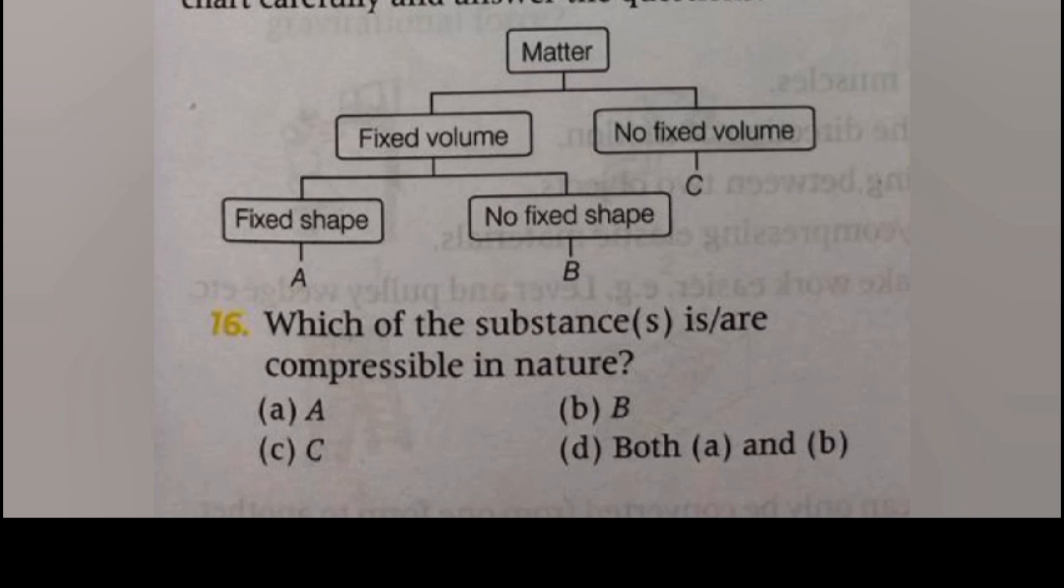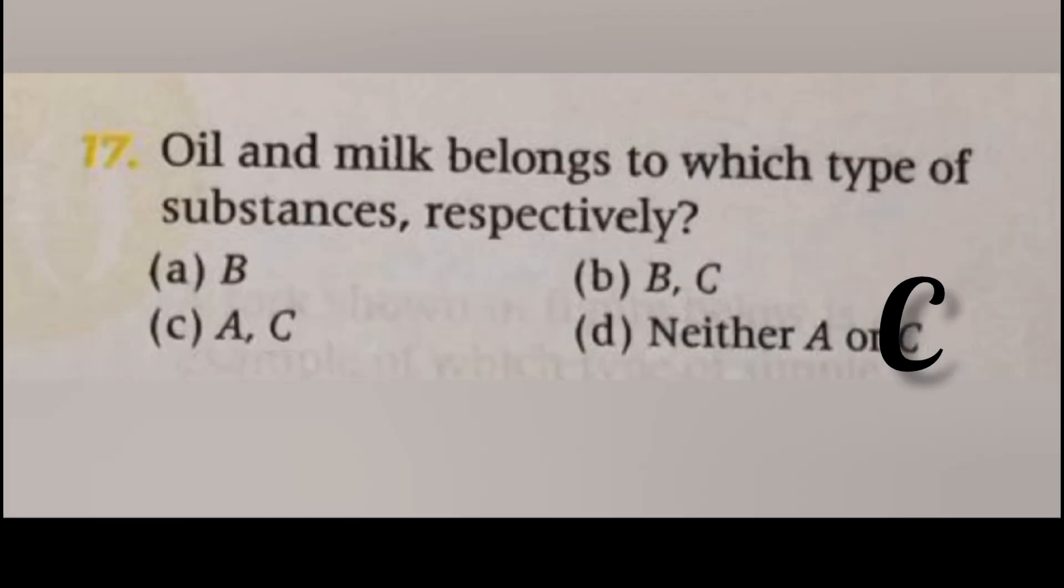Direction: Read the given flowchart carefully and answer the questions. Question number 16: Which of the substances are compressible in nature? The answer is C, non-fixed volume. Next, oil and milk belong to which types of substances respectively? The answer is A. Oil and milk are liquid in nature. They both do not have fixed shape, so B is do not have fixed shape.